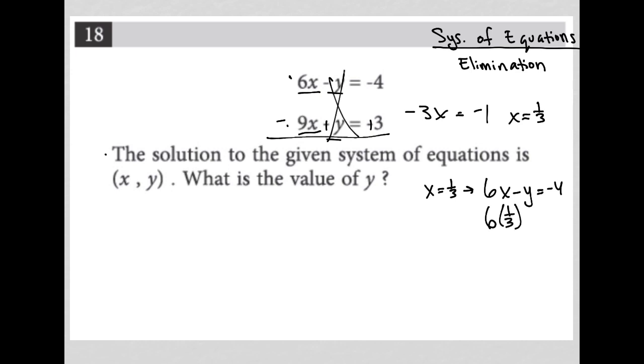6 times 1 third minus y equals negative 4. 6 times 1 third is the same as 6 over 1 times 1 third, which when you multiply the fractions gives you 6 over 3. Minus y equals negative 4. 6 divided by 3 is 2. So 2 minus y equals negative 4. I can subtract 2 from both sides, leaving me with negative y equals negative 6. And if negative y equals negative 6, we then know that positive y equals positive 6. So my y value is equal to 6.